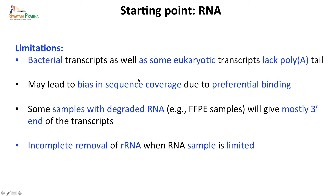Because the method depends on binding of the poly-A tail to the oligo-dT column, it introduces a certain bias in sequence coverage due to preferential binding of A-rich regions. Sequences that are more rich in A nucleotides are going to be overrepresented, and this bias can be introduced in the kind of transcripts you see in your cDNA library.